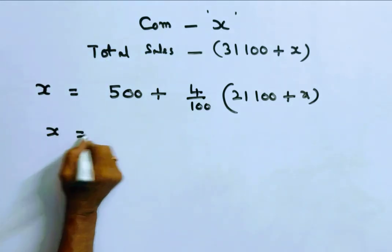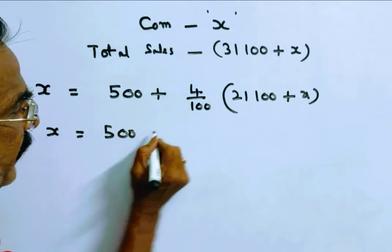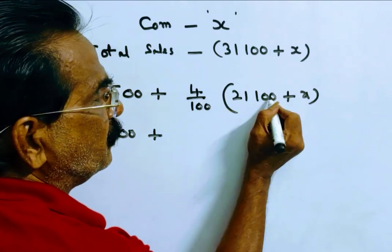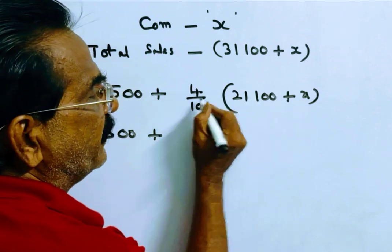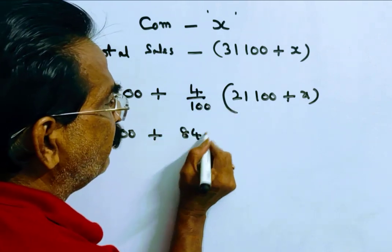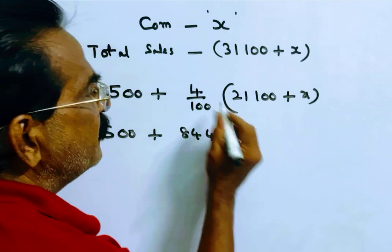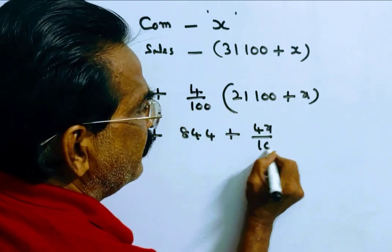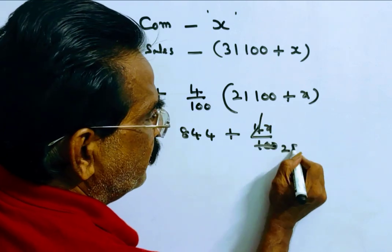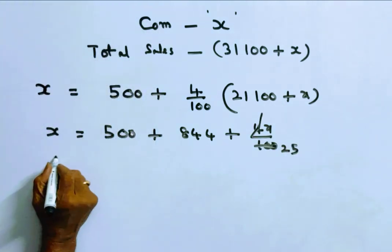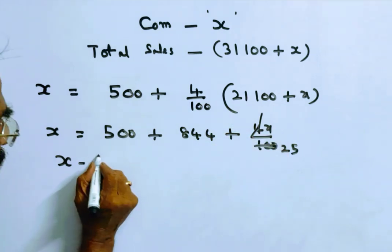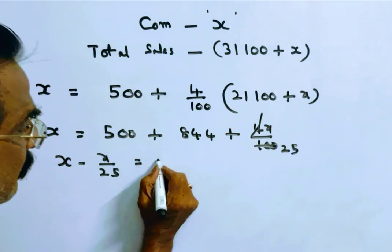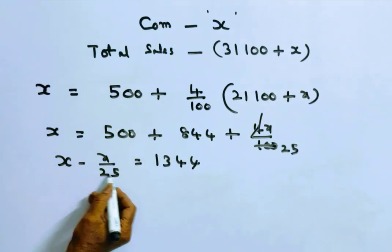X equals 500 plus 4 by 100 into 21,100. Canceling zeros, 4 into 21 is 844, so 844 plus 4X by 100. That equals 1344. Now X minus X by 25 equals 1344.